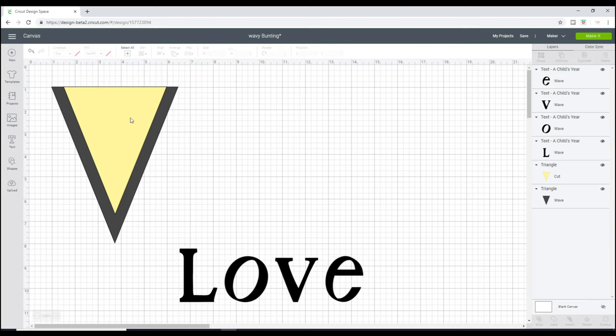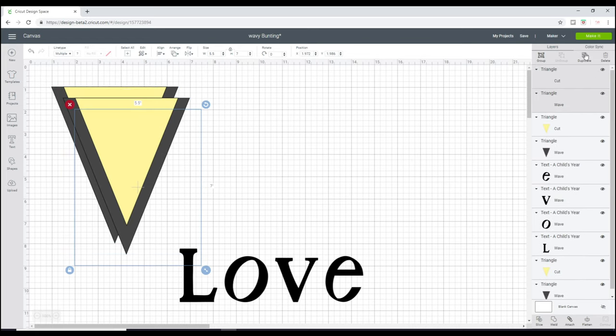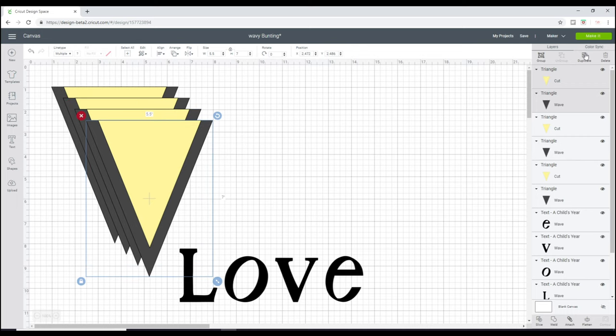So I'm going to do that for each of my text pieces. The yellow one I'm going to keep just as a straight cut, so I want a wavy cut and I want just a normal triangular cut.